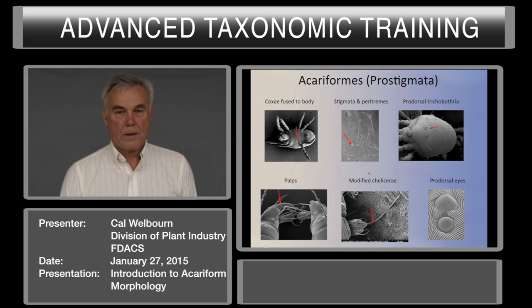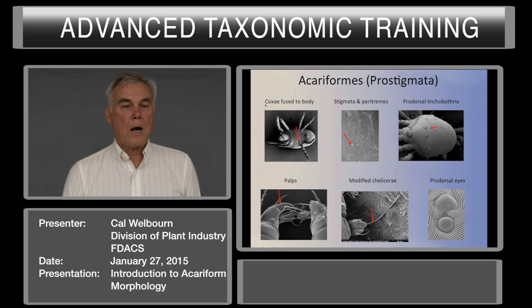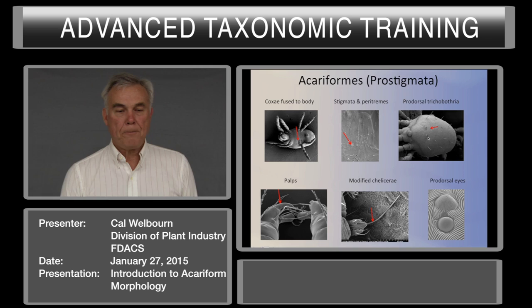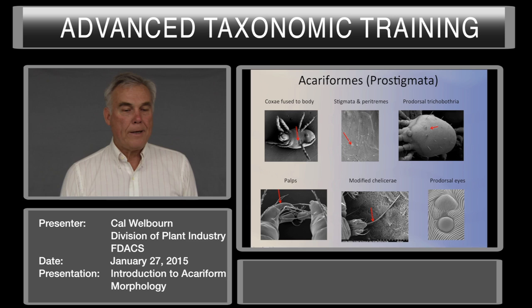The characteristics of the Acariformes, emphasizing the Prostigmata: the coxa is fused to the body—it's not a movable segment. Stigmata and paratremes are either on the chelicerae, the base of the chelicerae, or on the anterior dorsum. Prodorsal trichobothria are present or absent, usually in about the same place on the prodorsum. Palps are usually modified—they can be shortened. What most likely happens is what we call thumb-claw, where there is a claw-like seta or structure on the palp tibia, and the palp tarsus may be reduced or moved off to the lateral side.